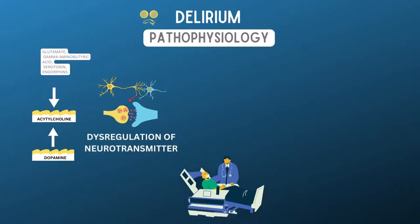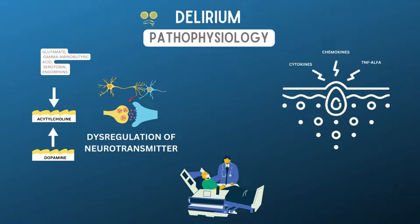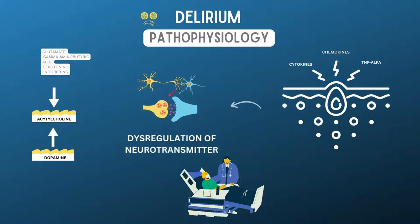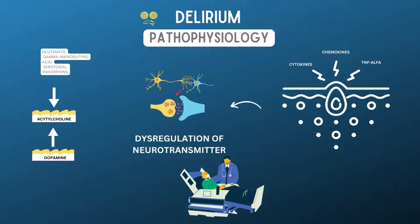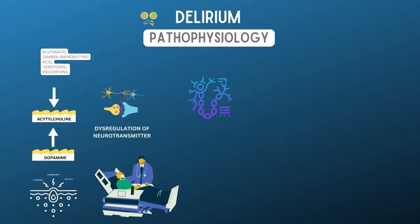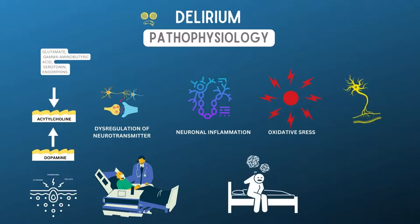During a critical illness, inflammatory indicators such as cytokines, chemokines, and tumor necrosis factor alpha trigger a chain of events that leads to microvascular impairment, thrombin generation, and endothelial damage. Because of the production of microaggregates of fibrin, platelets, neutrophils, and red blood cells in the cerebral microvasculature, inflammation can cause brain dysfunction by decreasing cerebral blood flow. There are also other mechanisms like neuroinflammation with microglial activation, oxidative stress, neuronal aging, and sleep-wake cycle dysfunction.